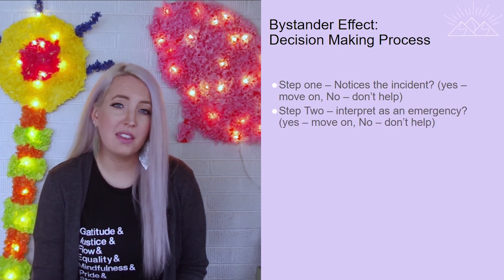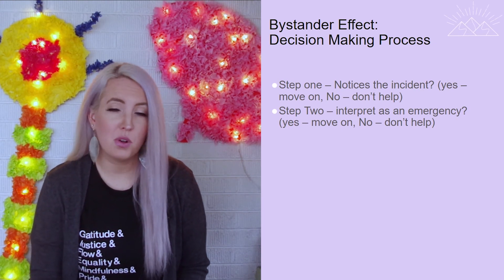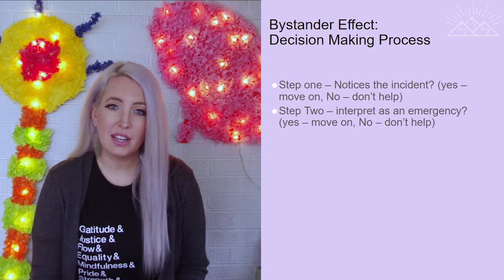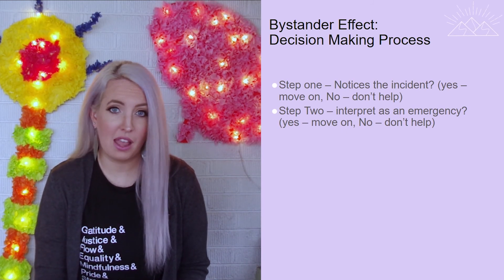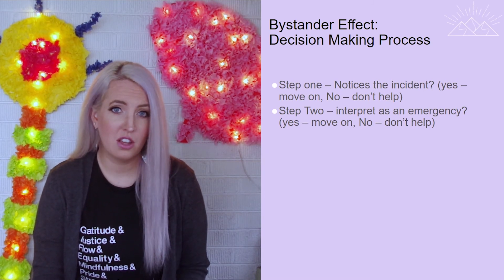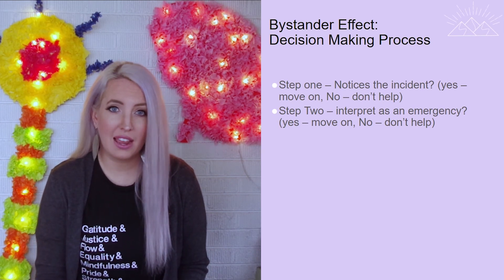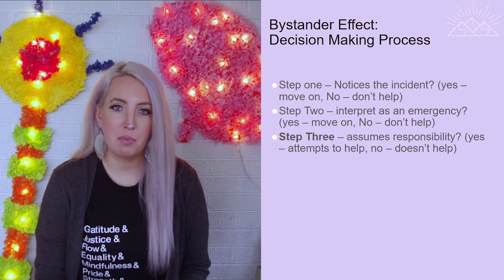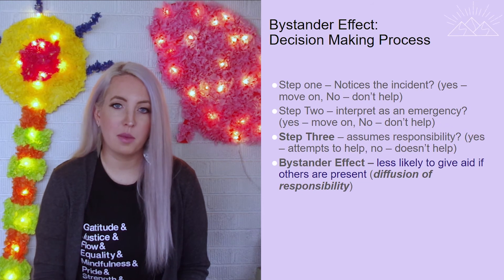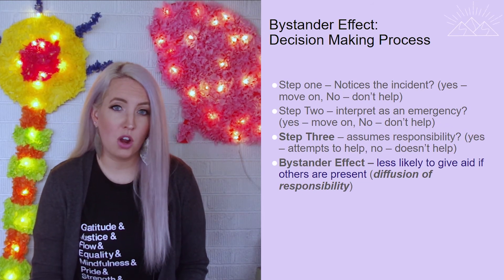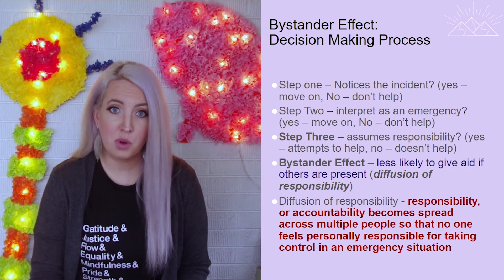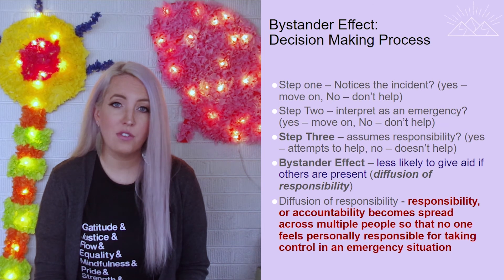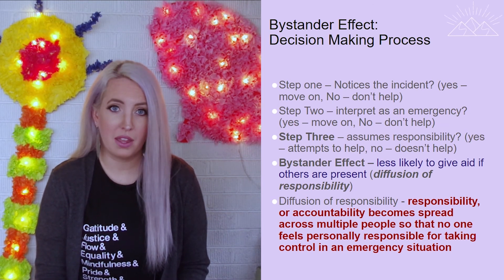What we found is a three-step process in examining an emergency that determines whether a person will help. The first step is noticing the emergency — people who didn't know an emergency was occurring clearly won't get involved. The second step is interpreting the event as an emergency — deciding whether someone is in serious danger. The third and final step is assuming responsibility. The more people there are witnessing an emergency, the more personal responsibility is diffused among the crowd, so everybody expects someone else to act, and nobody helps.